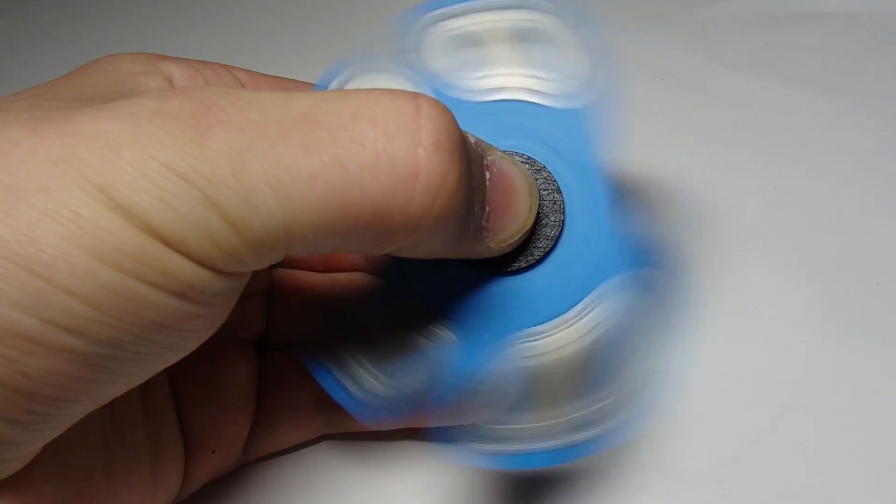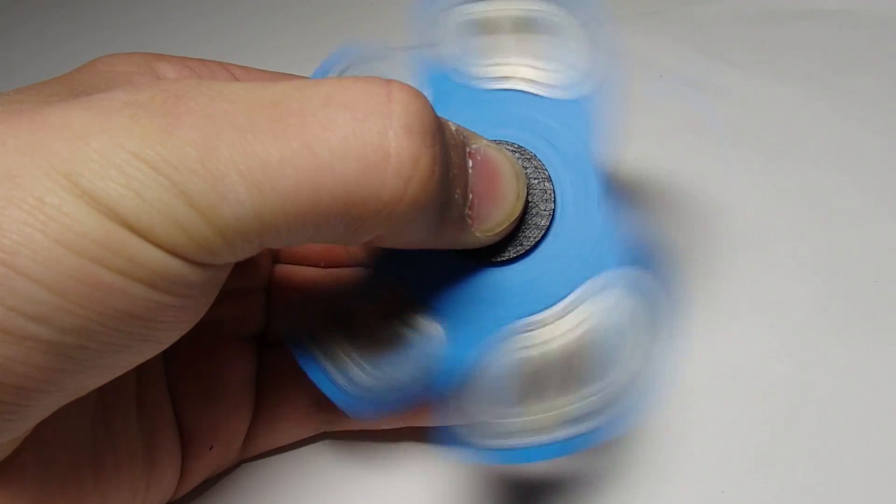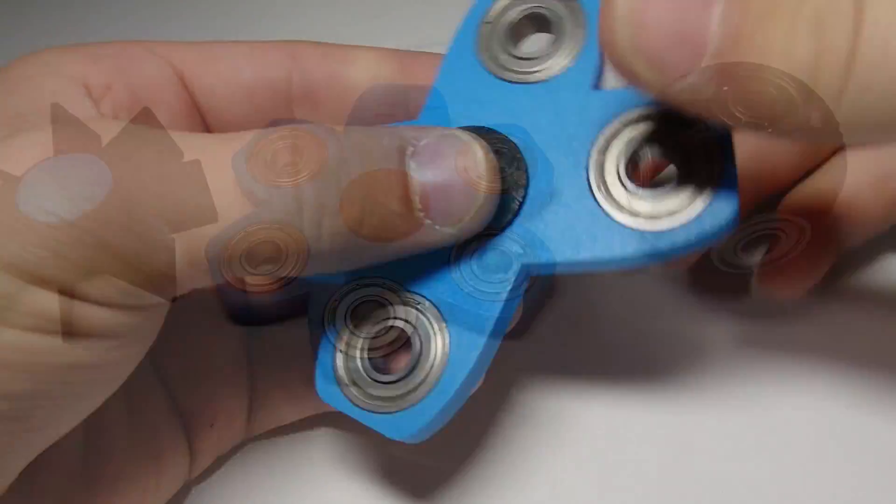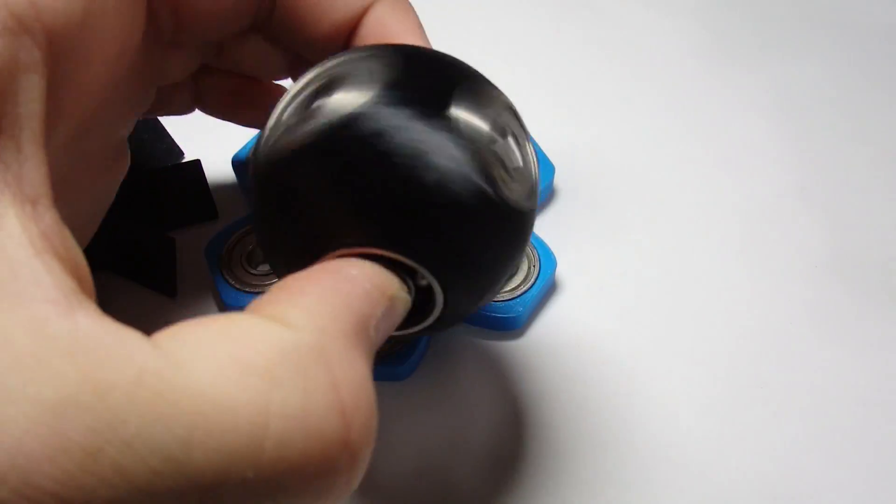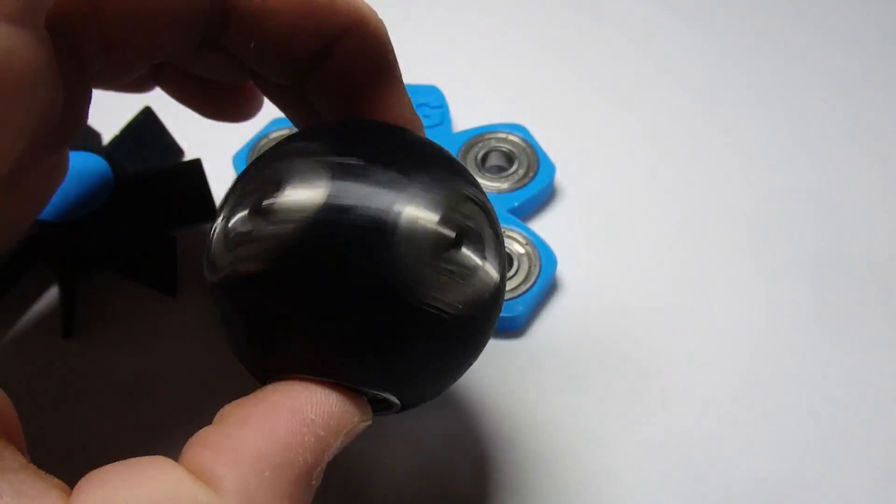I think my favorite out of the ones that I've made is the X fidget spinner just because it spins for a really long time and it has some good weight to it. But my favorite out of the three main ones that I made is definitely going to have to be the sphere.